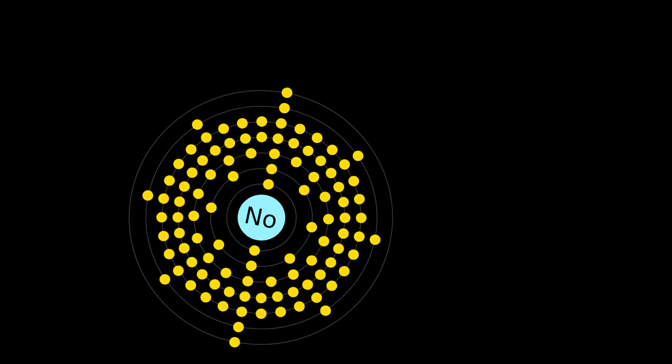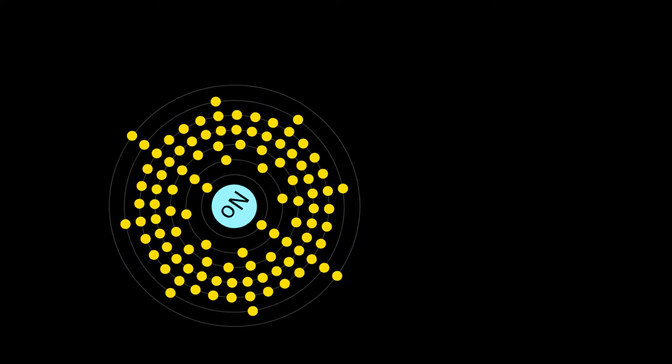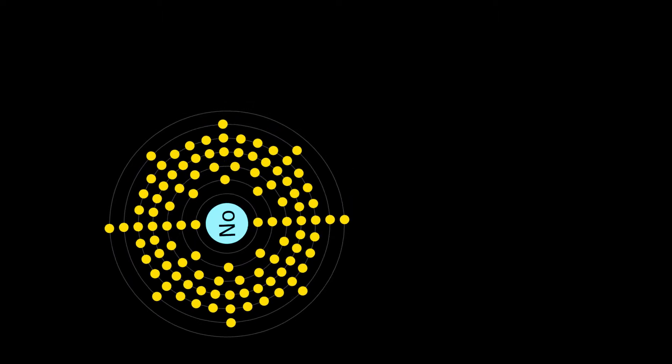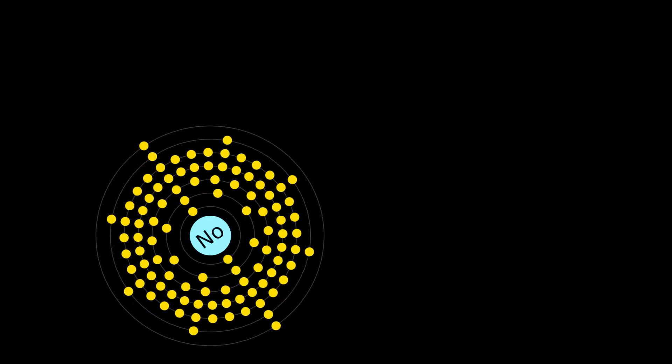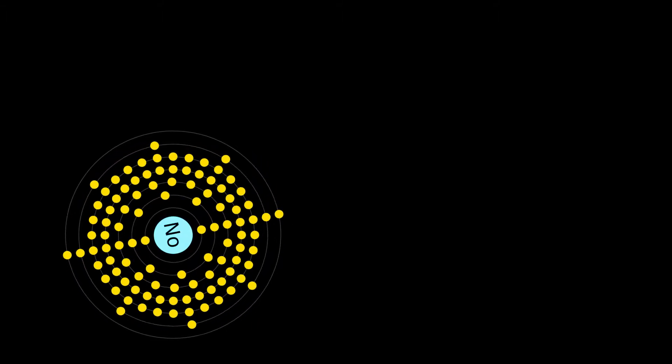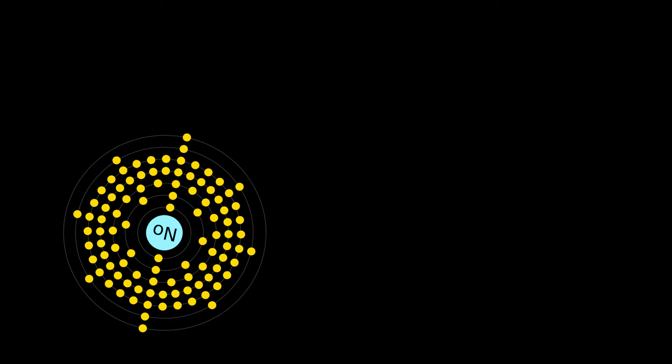A radioactive metal, it is the 10th transuranic element and is the penultimate member of the actinide series. Like all elements with atomic number over 100, nobelium can only be produced in particle accelerators by bombarding lighter elements with charged particles. A total of 12 nobelium isotopes are known to exist.